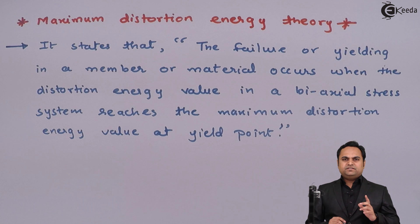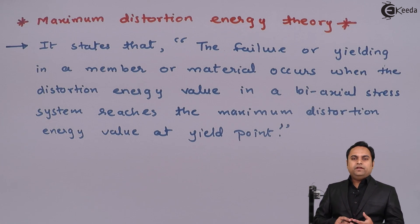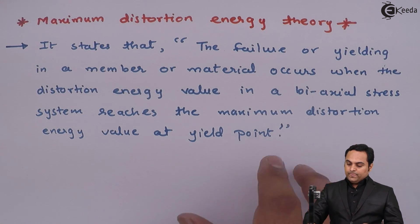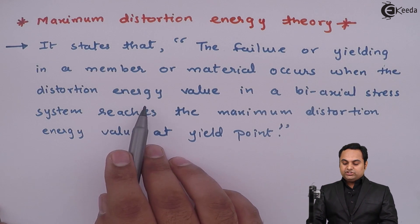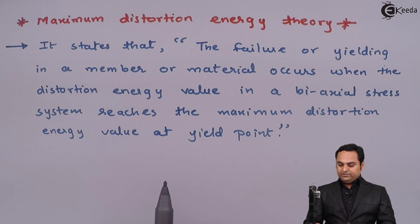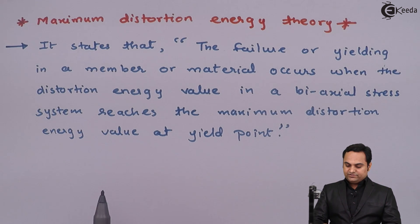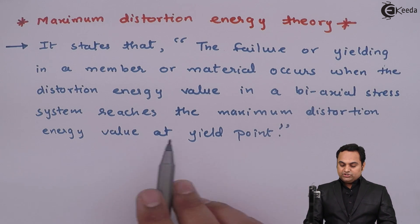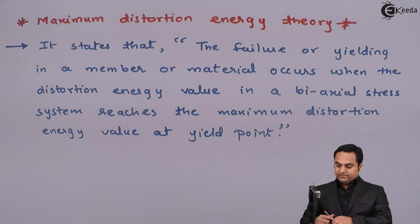A material will yield — yield means permanently deform — and when it gets permanently deformed it means it has failed. So the yielding or failure takes place when the distortion energy value in a biaxial stress system, that is if we have two different kinds of stresses, reaches the maximum distortion energy value at the yield point. To understand this, I'll draw the stress-strain graph.